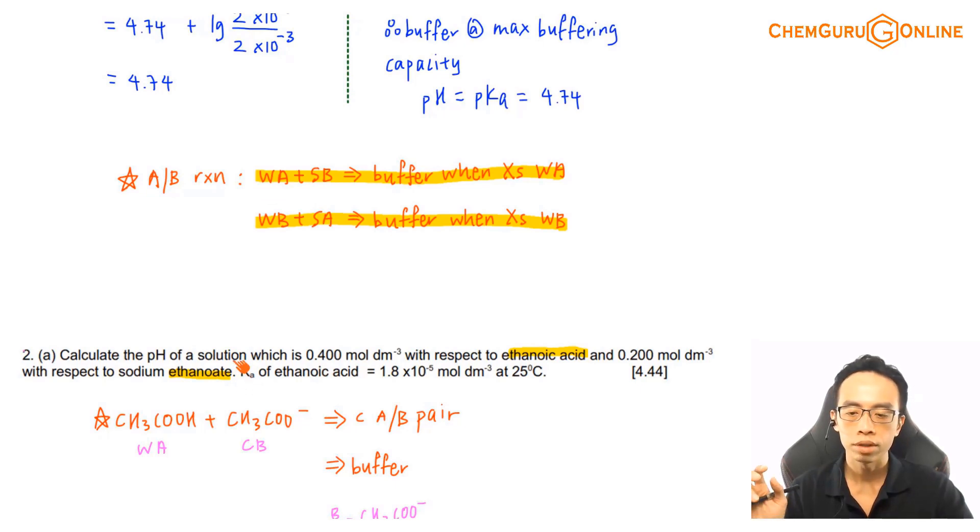Again now what we have is ethanoic and ethanoate. So I have a weak acid and conjugate base added together, there's no need for me to consider ice table, this is already a buffer solution.